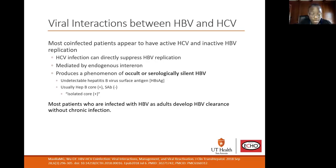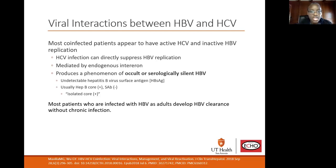Most co-infected patients appear to have active hepatitis C replication and inactive hepatitis B replication. Hepatitis C infection can directly suppress hepatitis B replication, and this is mediated by endogenous interferon. A person infected with hepatitis C makes interferon in response, and that can suppress hepatitis B replication, producing a phenomenon of occult or serologically silent hepatitis B. They may have an undetectable surface antigen but would have a positive hep B core antibody.